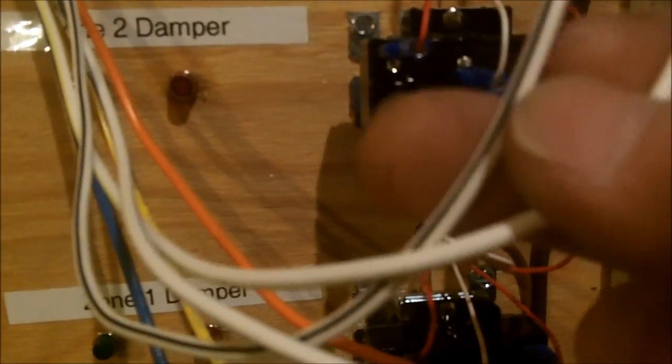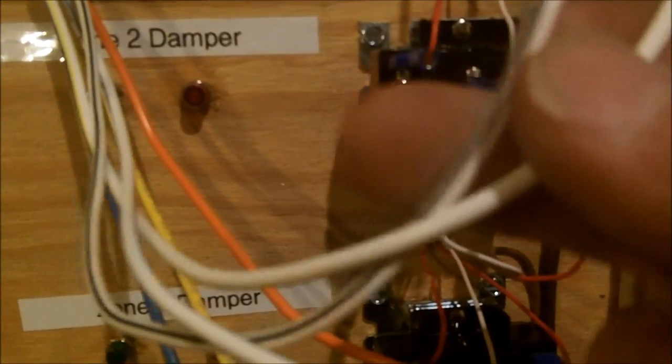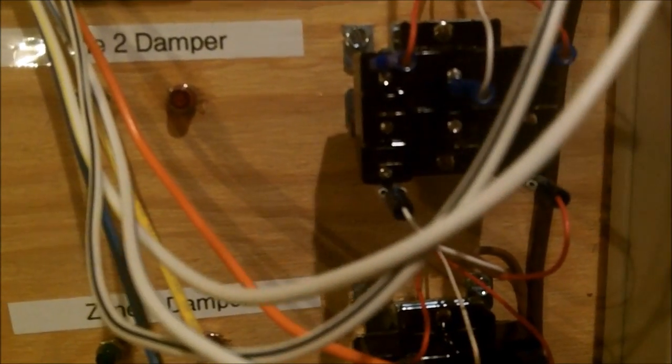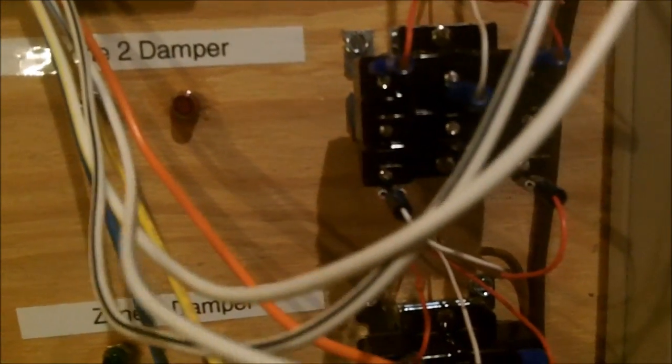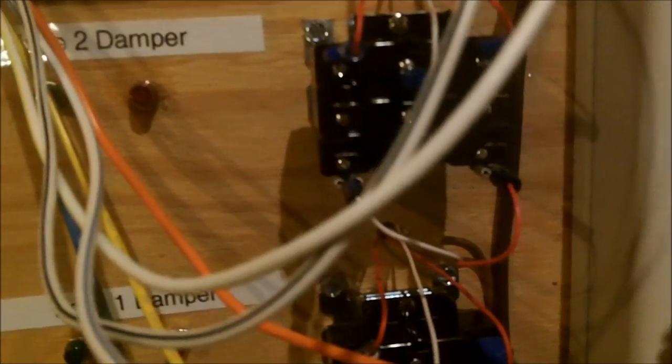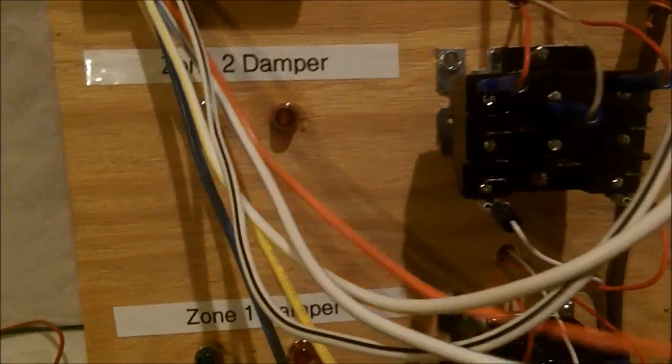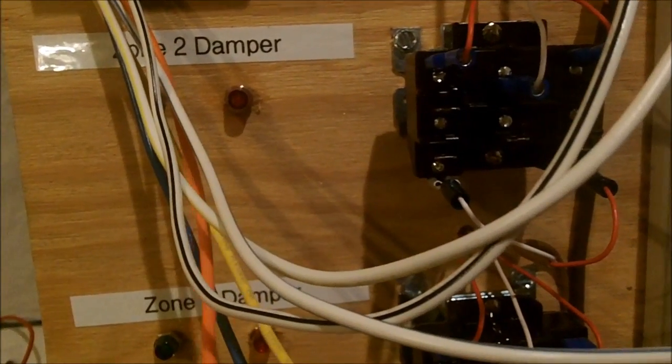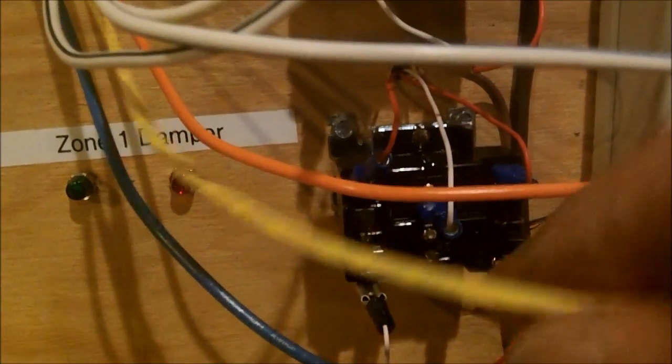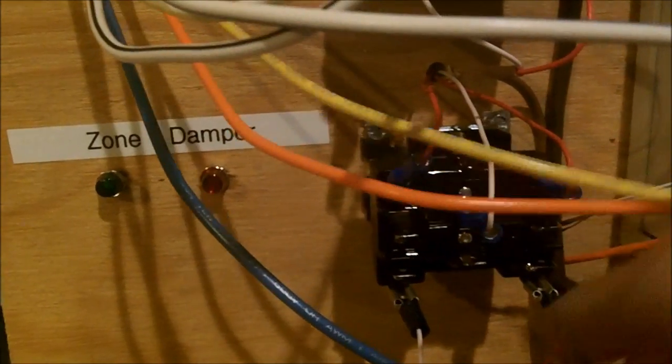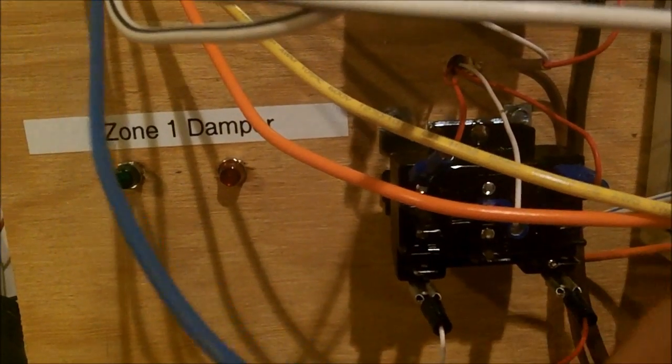Black and white being your 120 volt. Yellow and white is your common wire. And your blue and white is the 24 volt hot. Your orange wire is your normally open. Your yellow wire is your common. And your blue is your normally closed.